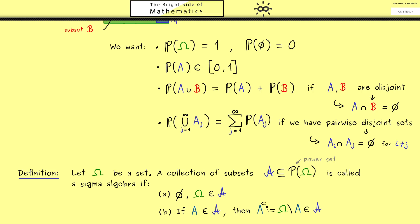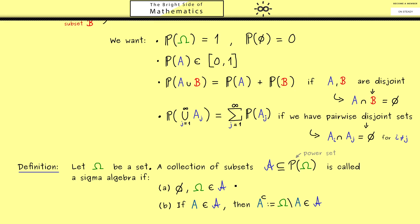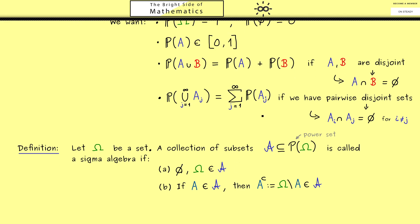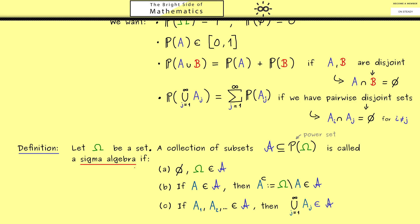What we always want to do is measure the probability of the empty set and the whole sample space omega, so both sets should be elements of A. Then the next property: if we take any subset A in our curved A, the complement should also be in curved A. The complement is defined as omega without the set A, denoted with upper index C. This makes sense because if we have the probability for event A, we should also be able to calculate the probability of not A.